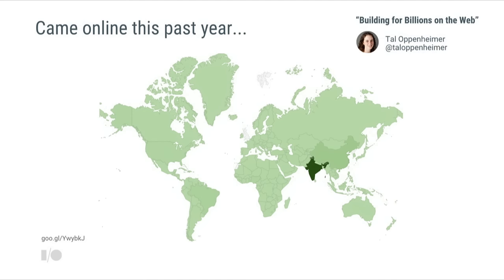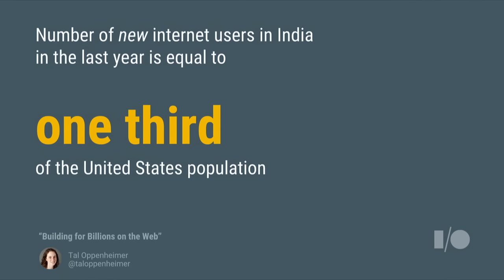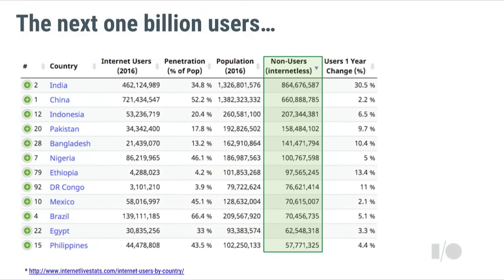That talk showed a slide illustrating where new users are coming from — the darker hues represent the density of new users coming online. The standouts are India and China. The number of new internet users that came online in India last year is a third of the US population. If you drill into the data further, the users who are not yet online and will be coming online are in India, China, Indonesia, Pakistan — it's not just the next billion, it's the next several billion. And they are not picking up the Nexus 6; they're picking up the lower-end devices.